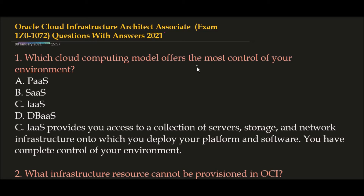Question 1: Which cloud computing model offers the most control of your environment? Option A: Platform as a Service, Option B: Software as a Service, Option C: Infrastructure as a Service, Option D: Database as a Service. The correct answer is Option C, Infrastructure as a Service. IaaS provides you access to a collection of servers, storage, and network infrastructure onto which you deploy your platform and software, giving you complete control of your environment.